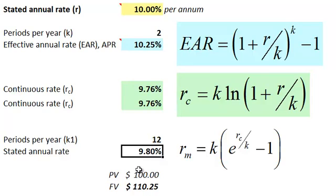And this would give me a 9.8%, which is now a stated or quoted or nominal rate. And as evidence of that, let's go ahead and take the $100 and grow it, compounded at the 9.8%, but monthly. So divide by 12 and then raise that to 12. And again, we get the $110.25.